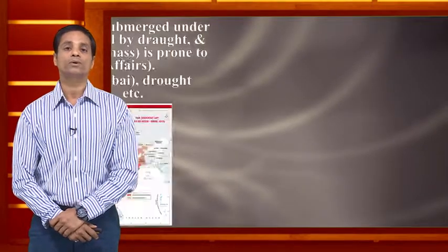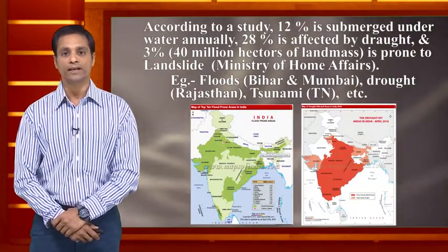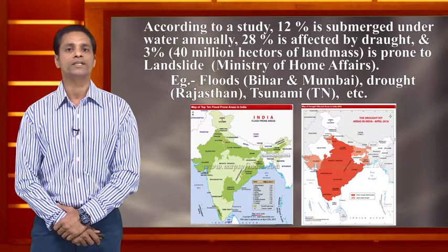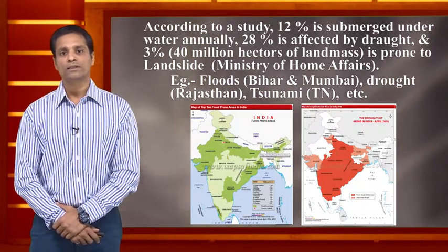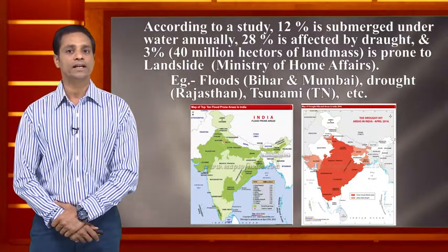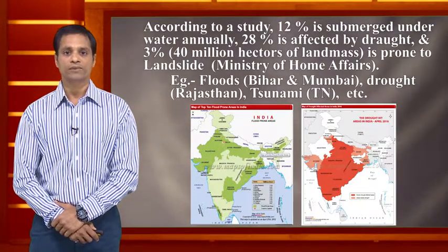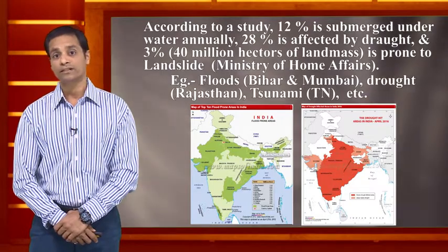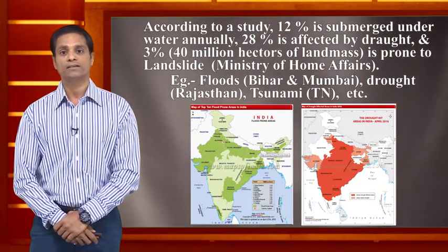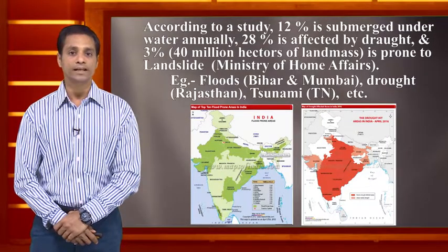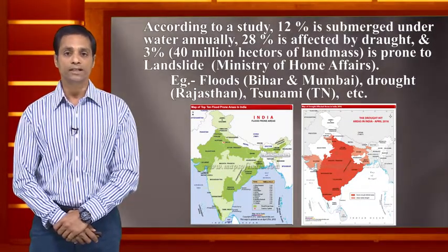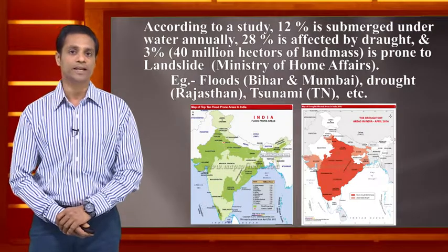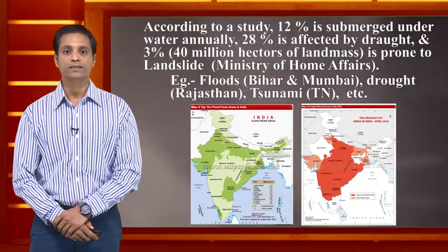From the Indian perspective, natural disasters include excess water categorized as floods and non-availability of water categorized as drought. According to the Ministry of Home Affairs, only three percent of our entire country faces the challenge of landslide, which is a secondary effect of flooding, and the total area covered is around 40 million hectares.